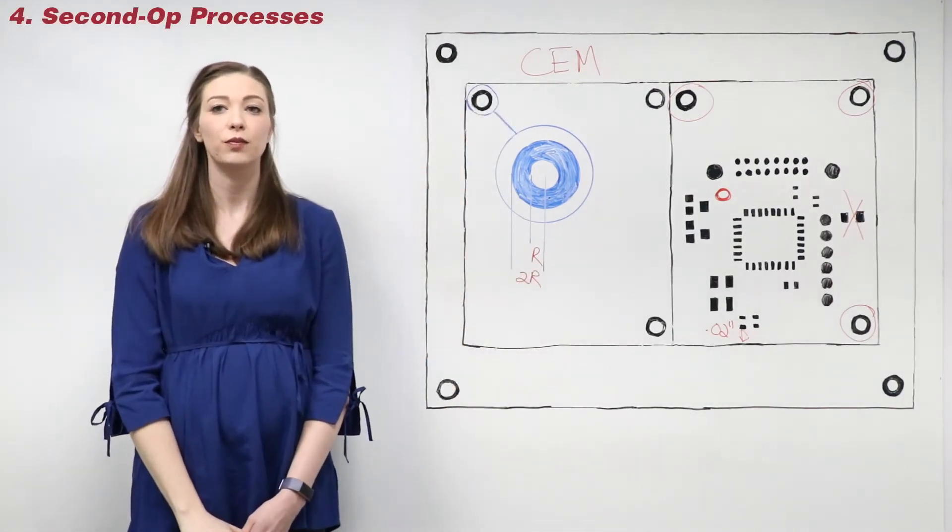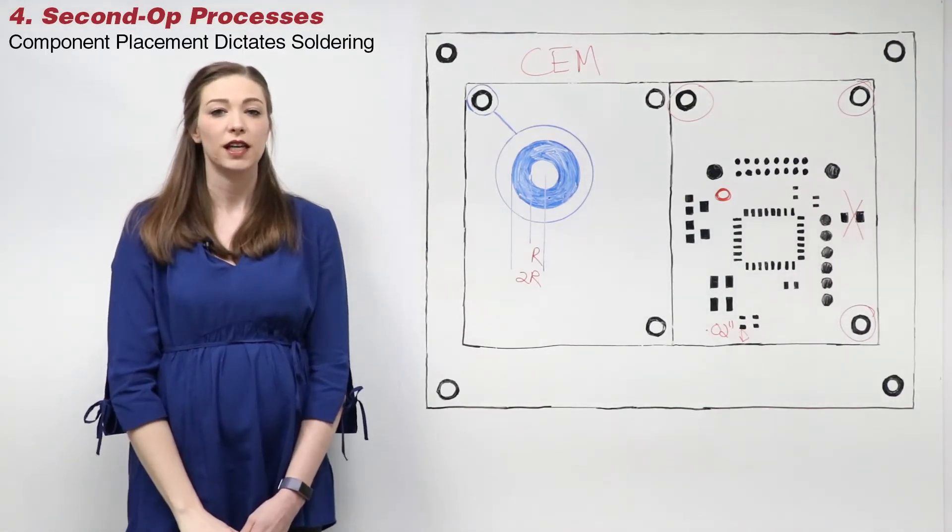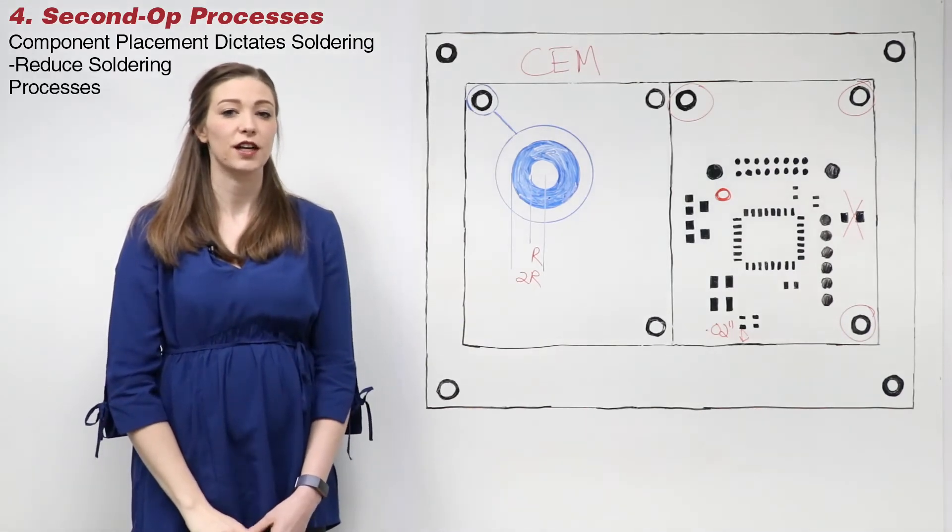Fourth, second op processes should be considered in the PCB layout phase. Component placement will dictate soldering requirements. Try to reduce the number of soldering processes necessary for assembly.